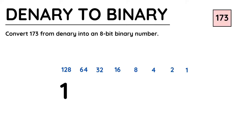When you write a 1 beneath a number you have to take that number away from your denary value, otherwise 128 or any number larger than that would all be 8 ones, which couldn't be possible as every denary number must have a unique equivalent. So because I've written a 1 underneath the 128, I have to take that away from my denary number of 173, which gives me 45, and I've carefully tracked that on the side of my page.